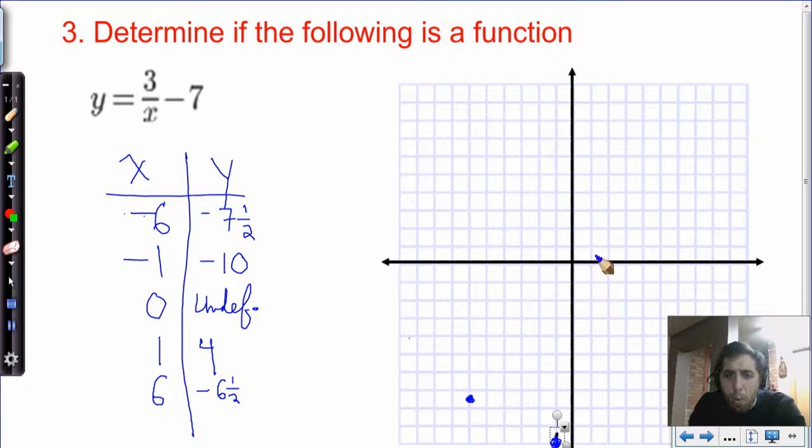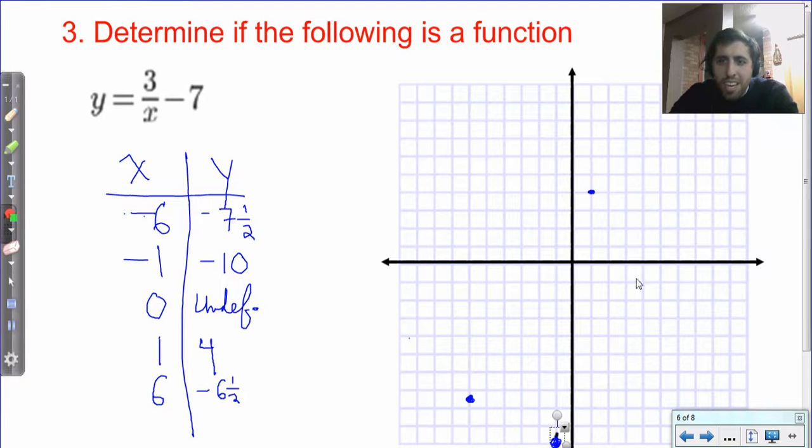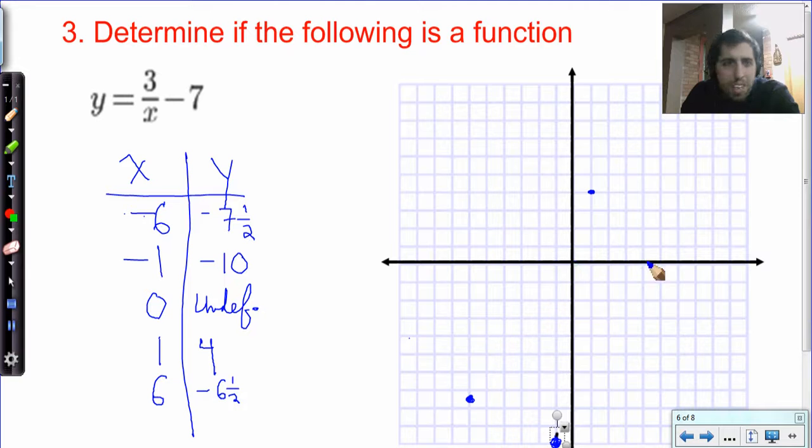1, 4 is up here. And then we have 6, negative 6 and a half. So, we'll go 6, negative 6. That's negative 5, 6 and a half.